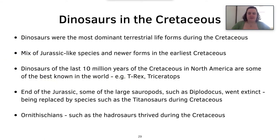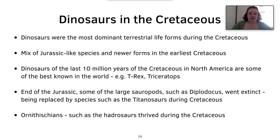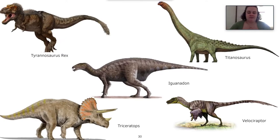Dinosaurs in the Cretaceous are probably the best known. At the start of the Cretaceous, there was a mix of Jurassic-like species as well as newer forms. The dinosaurs of the last 10 million years of the Cretaceous from North America are some of the best known in the world, including T-Rex and Triceratops. By the end of the Jurassic, some large sauropods such as Diplodocus went extinct and were replaced by species such as the Titanosaurs. Hadrosaurs diversified greatly during the Cretaceous. Key examples include T-Rex, Titanosaur, Iguanodon — a Hadrosaur — Velociraptor, and Triceratops.